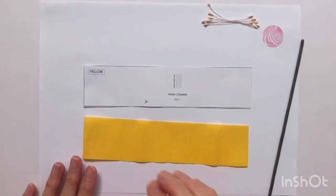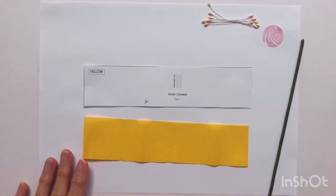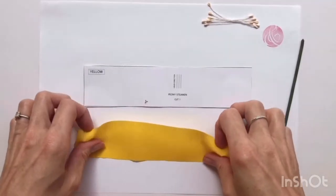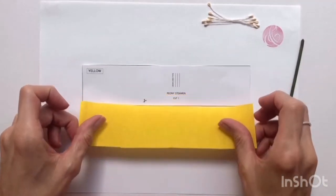Now I'm going to show you how to make the center stamen for your peony. As you can see, I've cut a piece of yellow paper using the template.